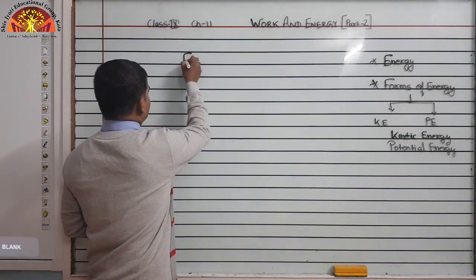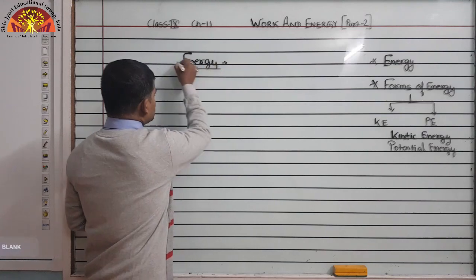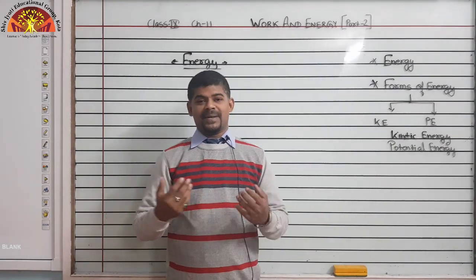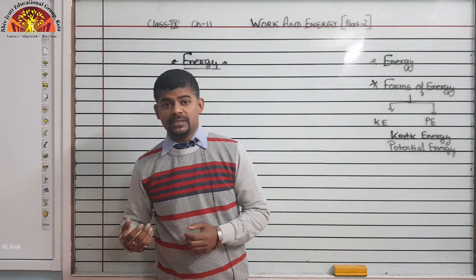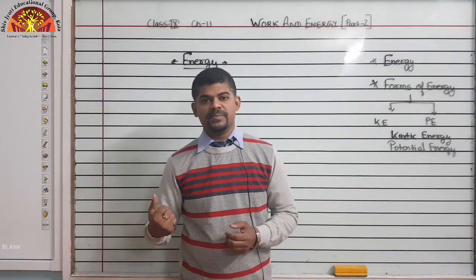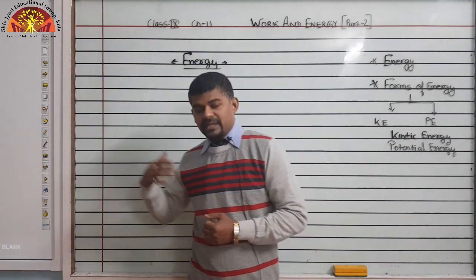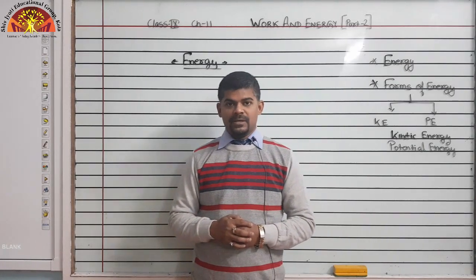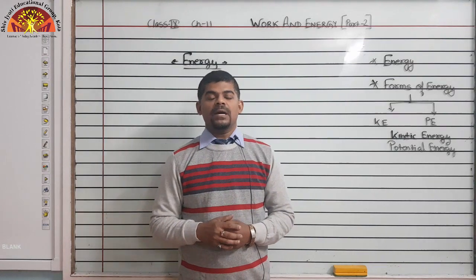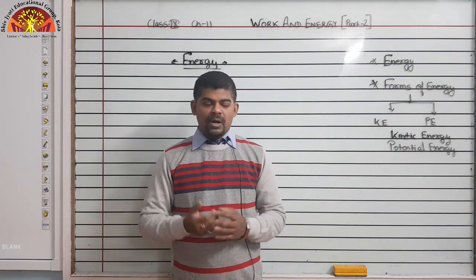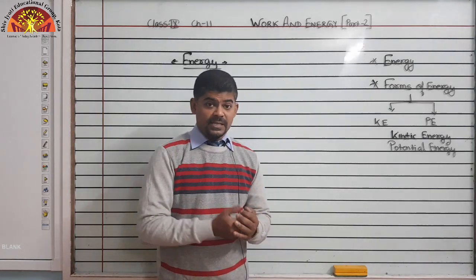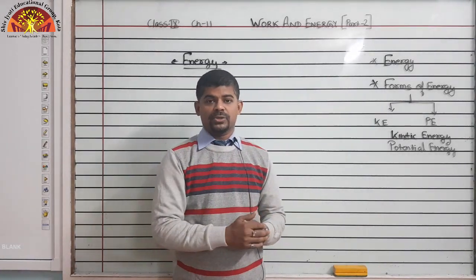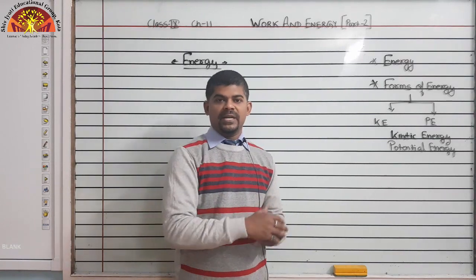Let us move towards energy. If we talk about energy, it is because of energy that we are able to do any work. If we talk about the Earth, it is getting energy from the Sun — so the Sun is the source of energy. There are other sources of energy also available. For example, from the nucleus, using the protons and neutrons available inside it, we can also create energy — you will see this in higher classes.